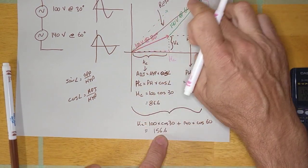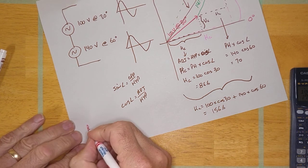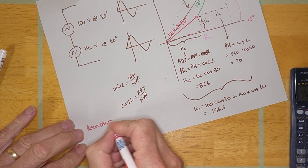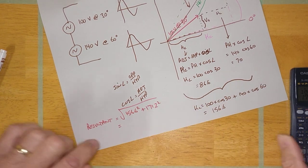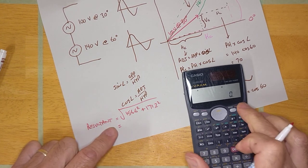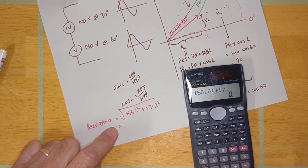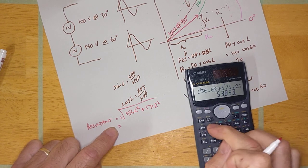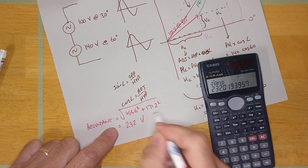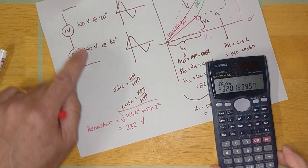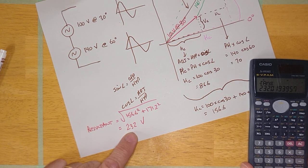Now I can calculate the length of the resultant using the Pythagorean theorem on those two components. The resultant equals the square root of 156.6² + 171.2². That works out to 232 volts. So 100V plus 140V gives a resultant of 232 volts.